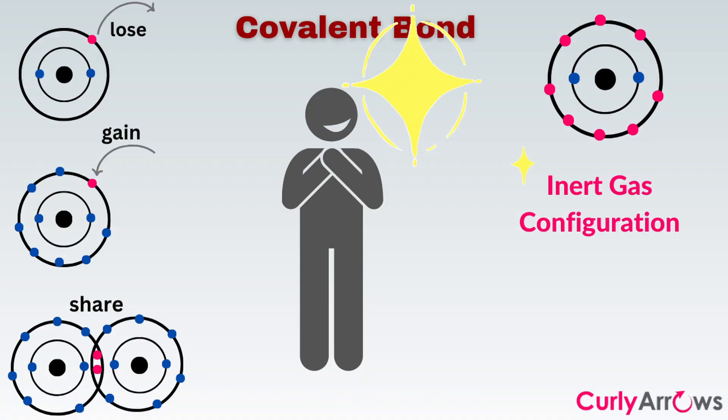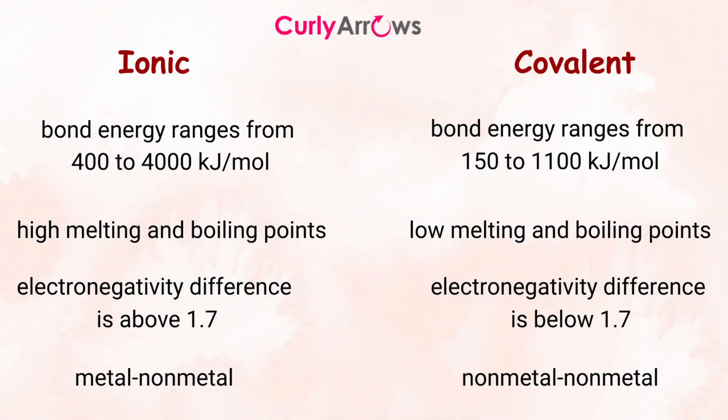When two atoms do not want to gain or lose their electrons but still lack an octet electronic configuration in their outermost shell, for stability they share electrons to form a covalent bond. The strength of a covalent bond is weaker than ionic and requires 150 to 1100 kJ per mole of energy for breakage. Covalently bonded compounds have low melting and boiling points compared to ionic, where the energy input is high.